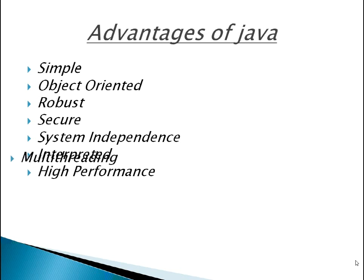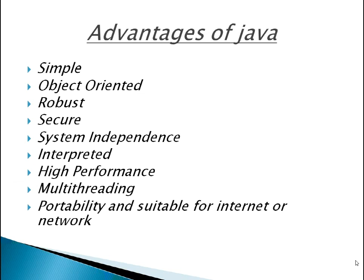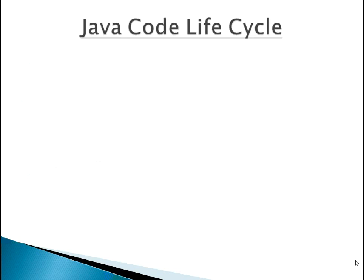Java uses multi-threading. JVM uses several threads to execute different blocks of code. Creating multiple threads is called multi-threading. Java is portable and suitable for the internet or network. As we know, the internet is a global network of all the computers existing on the earth, and anyone can connect their computer to this network. So there will be different types of computers with different processors and different operating systems existing on the internet.